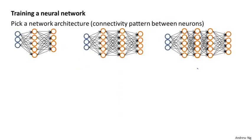When training a neural network, the first thing you need to do is pick some network architecture — and by architecture I just mean the connectivity pattern between the neurons. We might choose between a neural network with three input units, five hidden units, and four output units, versus one with three input units, two hidden layers of five units each, or three hidden layers with five units each and four output units. The choices of how many hidden units in each layer and how many hidden layers are architecture choices.